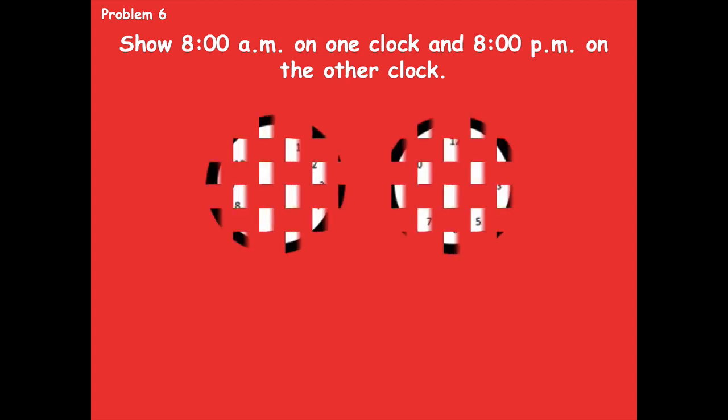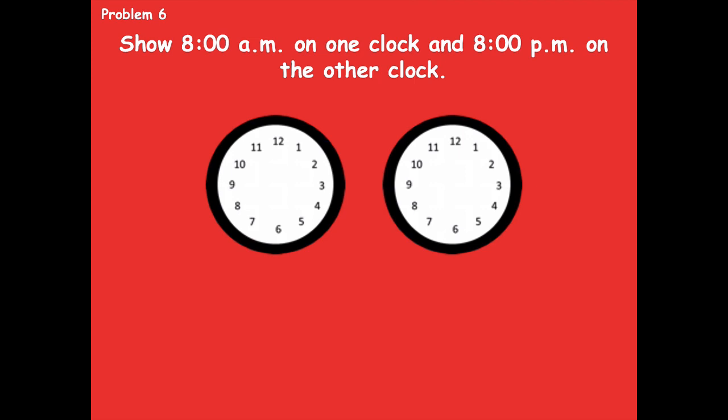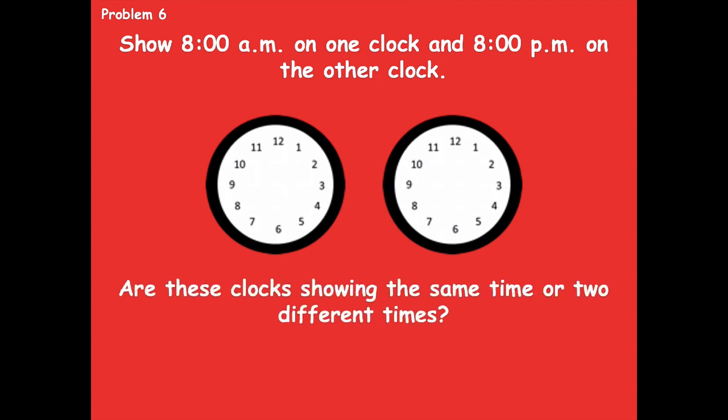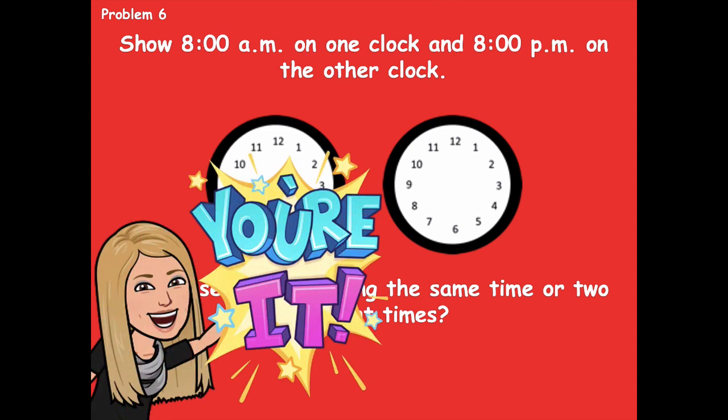Let's take a look at problem six — the last one! You're going to show 8 a.m. on one clock and 8 p.m. on the other clock. Then you're going to answer the question: are these clocks showing the same time or two different times? Draw the two clocks and then answer the question. Pause the video, do that, and then click play when you're ready to go over it together.